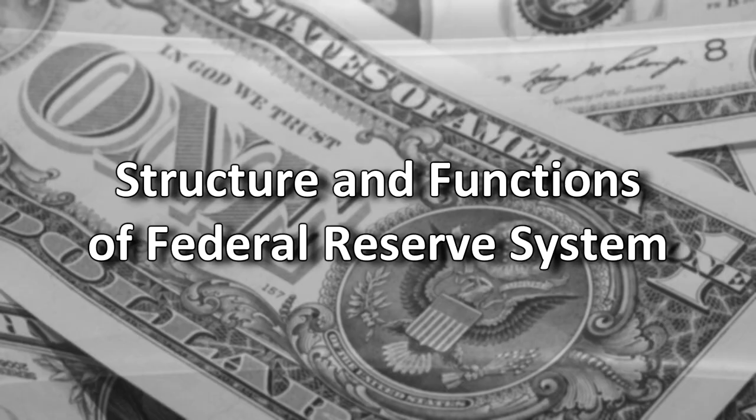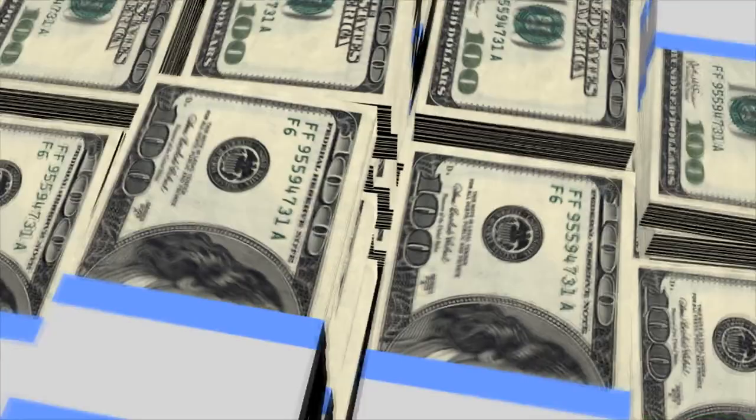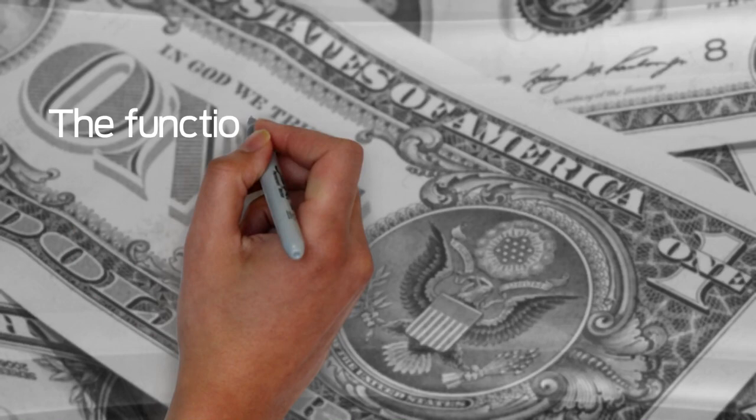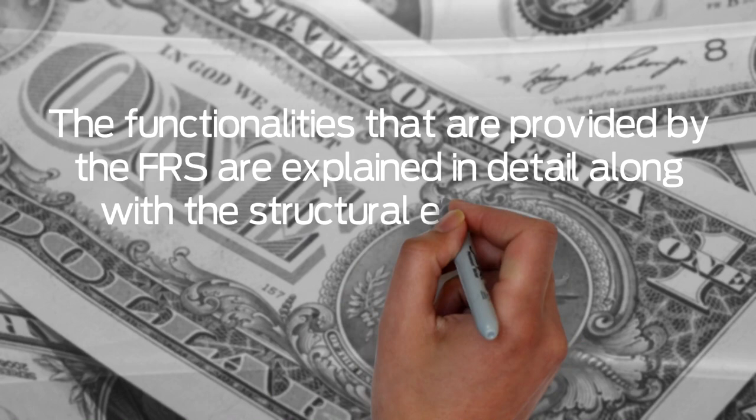Structure and Functions of Federal Reserve System. The FRS considered as the central bank of the U.S. maintains a stable economic and financial condition within the country by implementing four important functionalities that includes conducting monetary policy, supervising and regulating the commercial banks, maintaining the financial market stability, and providing banking services. The functionalities that are provided by the FRS are explained in detail along with the structural elements that facilitates the implementation of these functionalities.